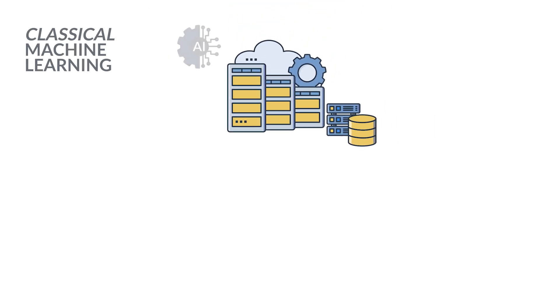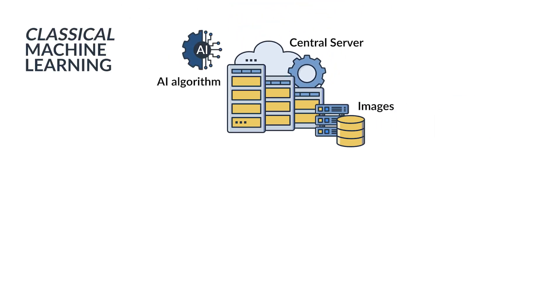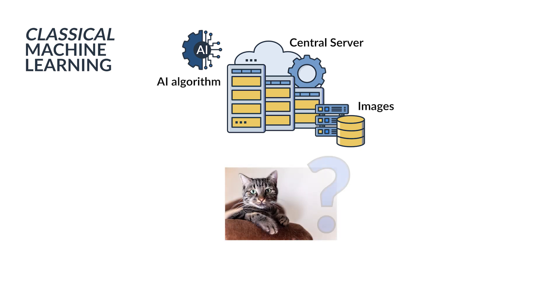Let's see how it works with a toy example. Imagine our algorithm is going to be trained to, given an image of an animal, identify which kind of animal it is — cat, dog, or horse.